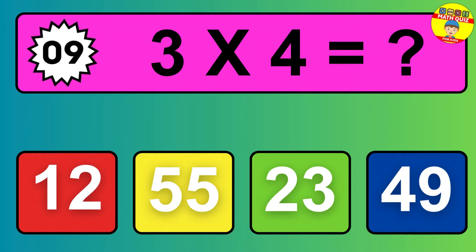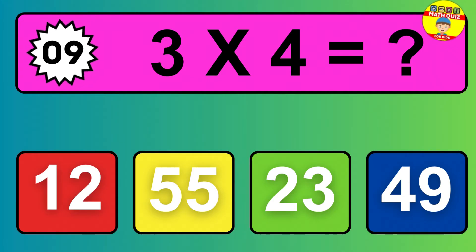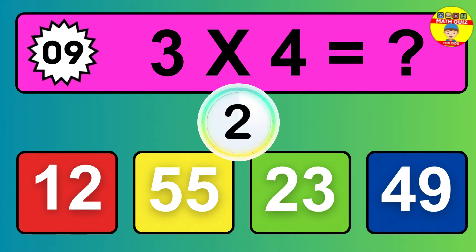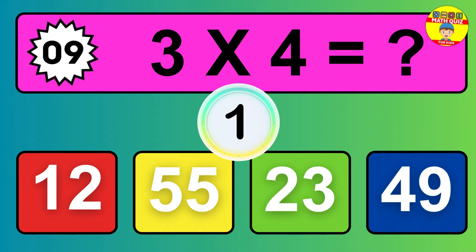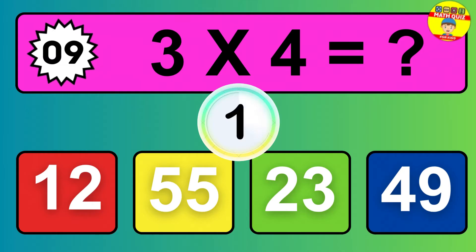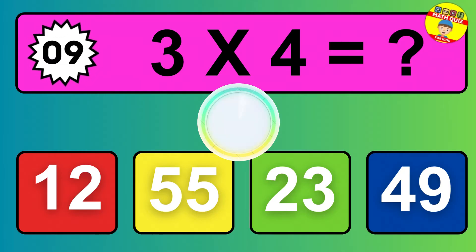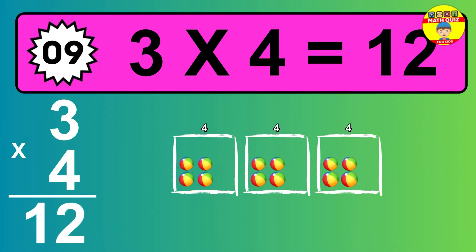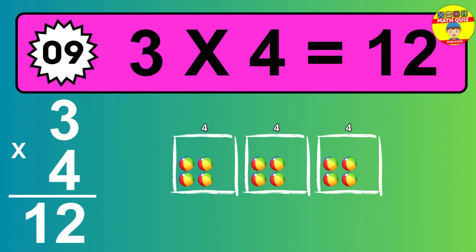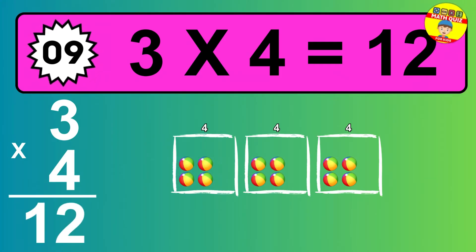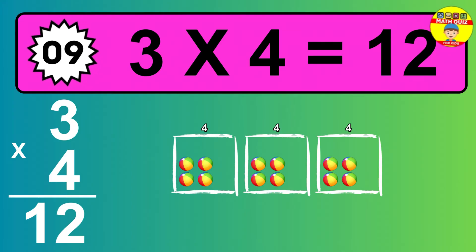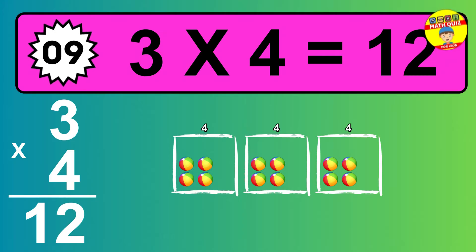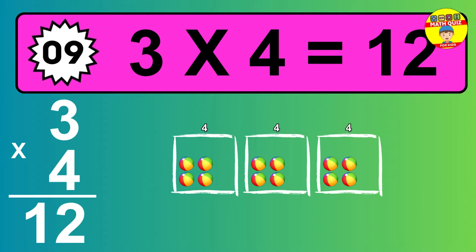Question 9. 3 times 4 equals what? The answer is 3 times 4 is 12. To calculate, we have 3 groups with 4 balls each one. So how many balls do we have? 12 balls.